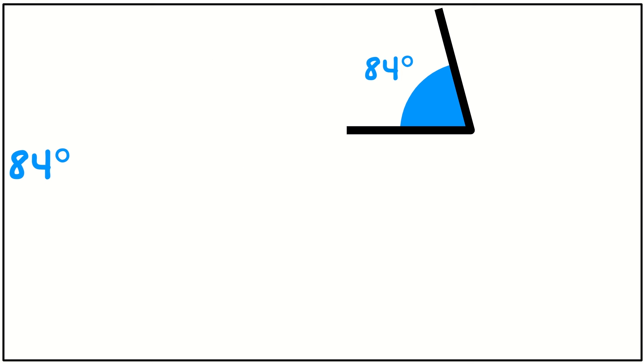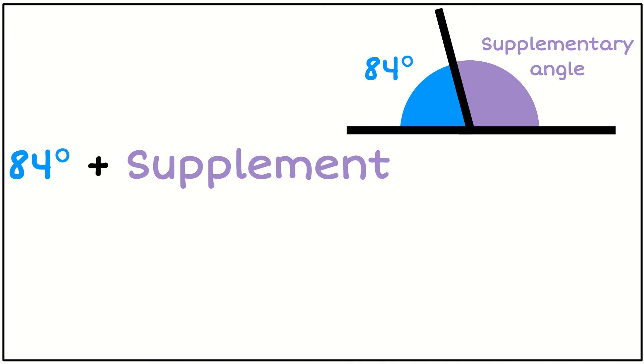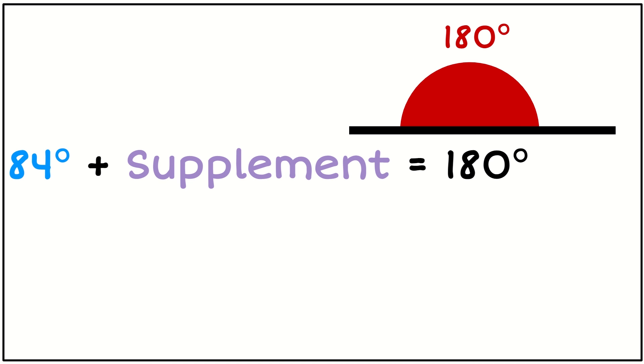So I know that 84 to be a supplement means that those angles have to add up to 180. So 84 degrees plus the supplement angle has to equal 180 degrees.